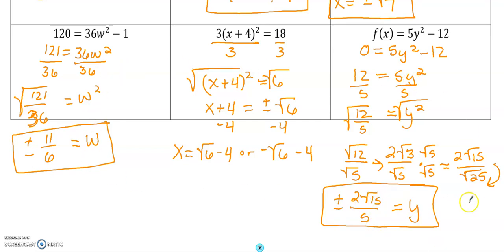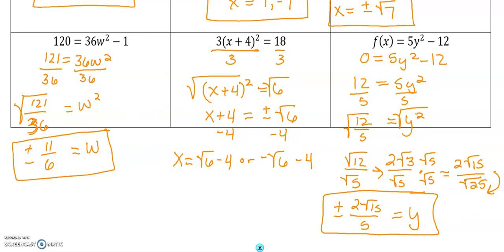These bottom ones were definitely more complicated than the top. Please make sure you read your directions. It might say give your answer in simplest radical form. It might say give your answer as a decimal.